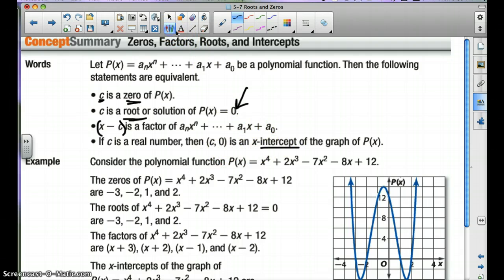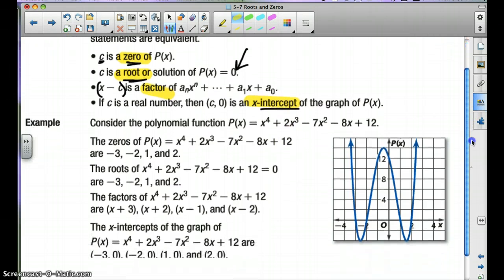So all of these go hand in hand. A zero, a root, a factor, and an intercept. They're all the same thing. They all have a relationship.